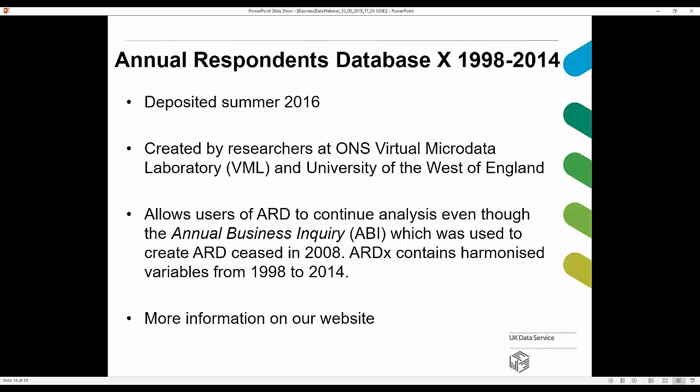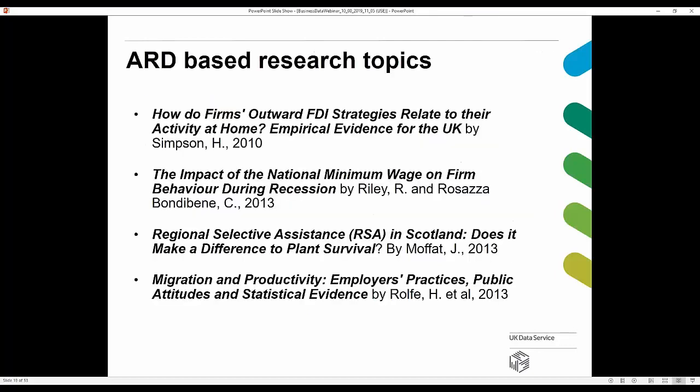The ARDx contains harmonized variables from 1998 to 2014, created from two ONS surveys: the Annual Business Inquiry and the Annual Business Survey. Research outputs from the ARD and ARDx cover a wide range of topics including outward foreign direct investment strategies, regional selective assistance, migration and productivity, and effects of the national minimum wage.